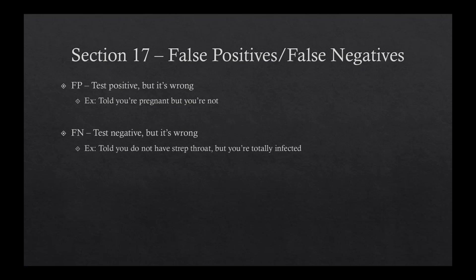Section 17 is false positives and false negatives. Think about going to the doctor and being tested for strep throat — they tell you yes, you tested positive for strep throat, but you find out you do not have strep throat. That's a false positive: you tested positive, but it's wrong. On the opposite side, a false negative is when you test negative, but that's wrong — you're told you don't have strep throat, you leave, and you're totally infected. Neither one of these things is good. The wrong test result is bad in any way.